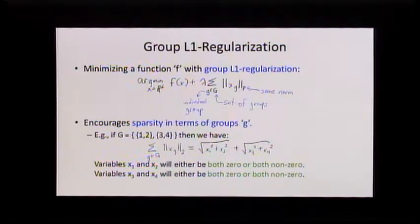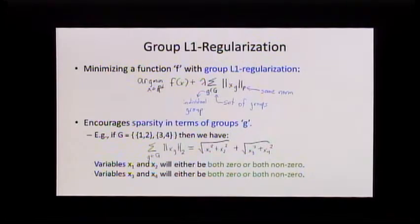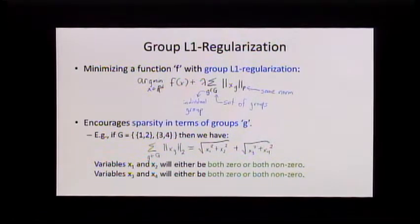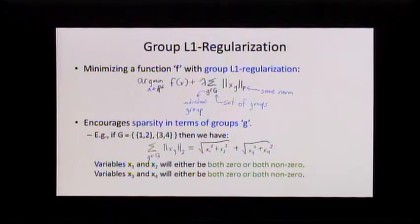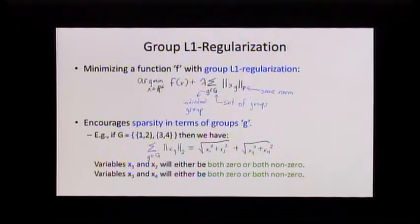I'm looking at the subvector of x corresponding to the group and taking some p-norm of the group. This encourages sparsity in terms of the groups if you pick the norm correctly. If capital G was {1,2} and {3,4} as my two groups, then this term would be the square root of x1² plus x2² plus the square root of x3² plus x4². When you use this regularizer, it encourages x1 and x2 to either both be non-zero or both be zero — you never have x1 but not x2.